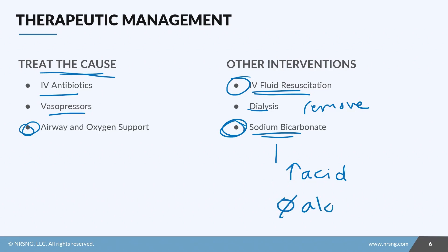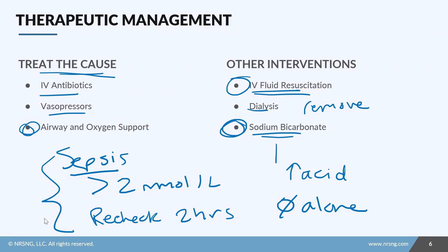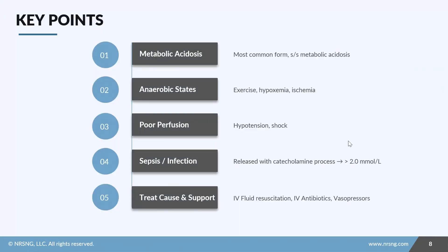Regarding the Surviving Sepsis Campaign guidelines: any lactic acid level greater than 2 mmol/L in the presence of an infection is considered indicative of a septic situation. We typically recheck the lactic acid level in two hours to evaluate the trend. Make sure you know your facility's specific guidelines on how often to recheck and how to intervene. Priority nursing concepts for a patient with elevated lactic acid are acid-base balance, perfusion, and infection control.